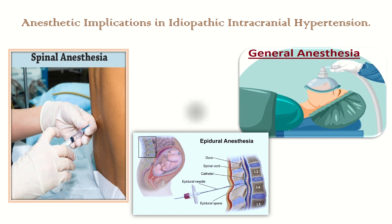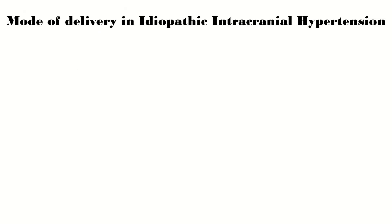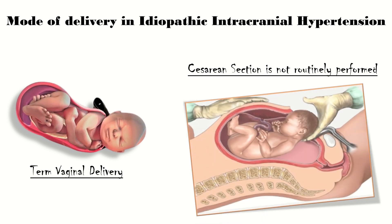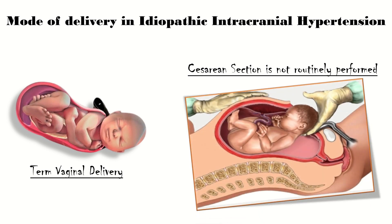There is insufficient evidence regarding the safe mode of delivery in women with idiopathic intracranial hypertension. A case series has reported more than 50% incidence of term vaginal deliveries. The increase in intracranial pressure during labor is transient and not harmful to mother or baby. A cesarean section is not routinely required, and the mode of delivery should be determined by obstetric factors only.